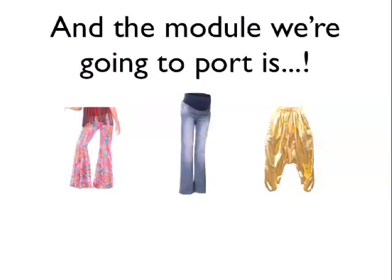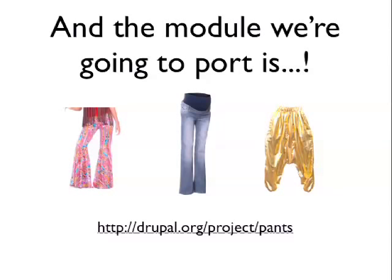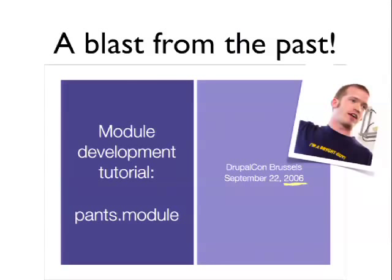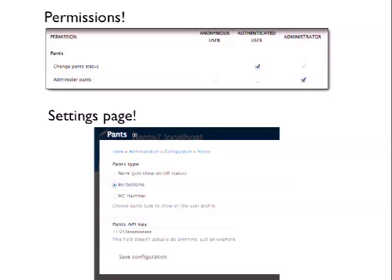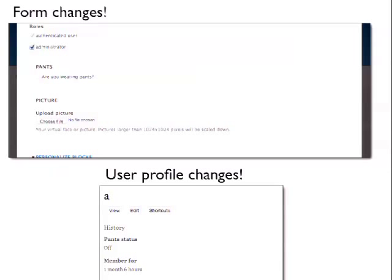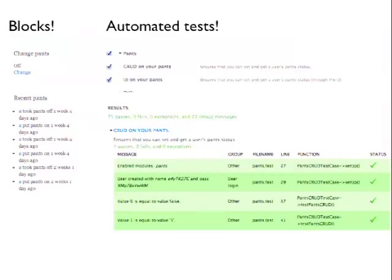The module that we're going to port is the Pants module. Pants module is actually a blast from the past — this was a presentation that James Walker gave in 2006. It was a Drupal 4.7 module that I ported to Drupal 7 and then had to port again to Drupal 8. But it's great because this little module has everything: permissions, a settings page, form changes, a user profile change, blocks, and automated tests. So it's a really good example module to expose you to a lot of the different APIs in Drupal.